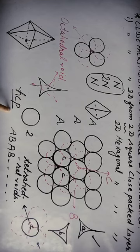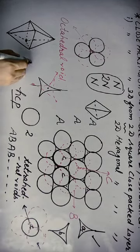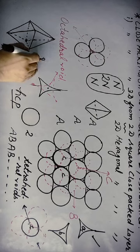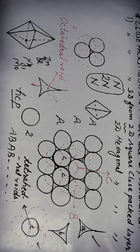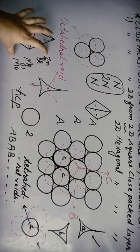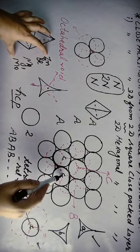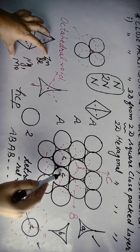HCP — hexagonal close packing — is found in metals such as magnesium, molybdenum, beryllium, and zinc. All these metals adopt the hexagonal close packing arrangement. This occurs when we place the third layer by covering tetrahedral void C.